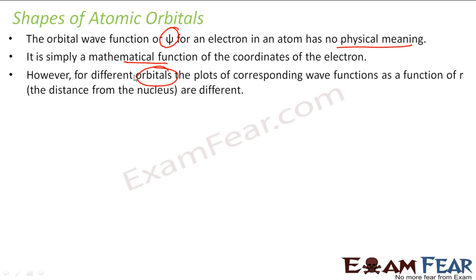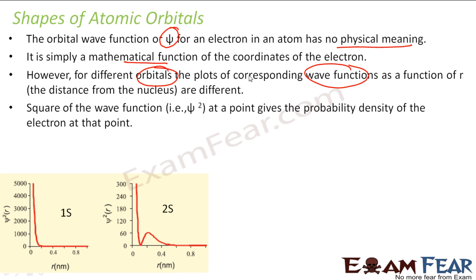However, for different orbitals, the wave functions as a function of r are different. The shape of the orbital you get from these wave functions is different. The square of this wave function gives the probability density for the electron at a given point. For 1s, the electrons have high probability near the center, which goes off at larger distances. For 2s, there is a region of high probability farther out.